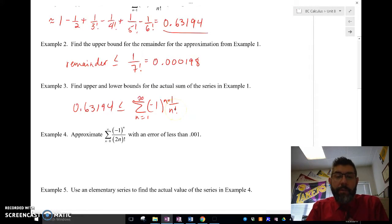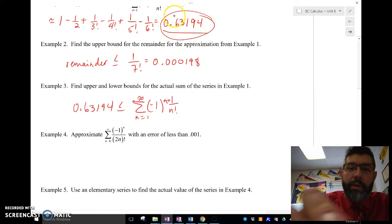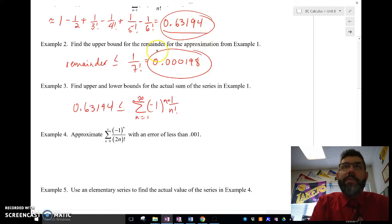The actual value of that's going to be between my lower bound of 0.63194, which is what I got for the first six terms, plus anything I have left over. Well, what do I have left over at least as much as this value plus this value?